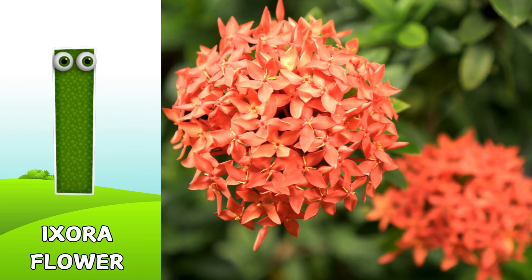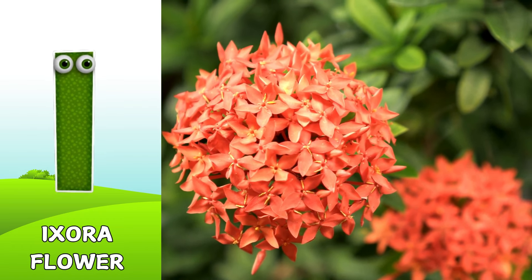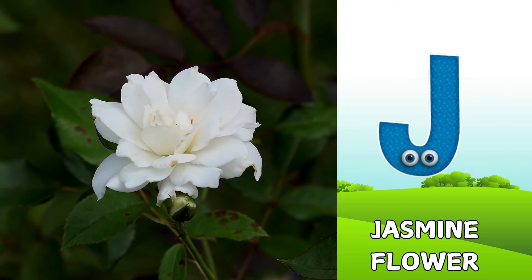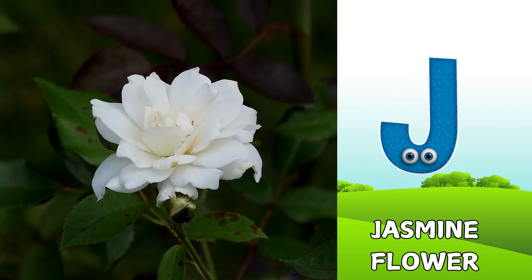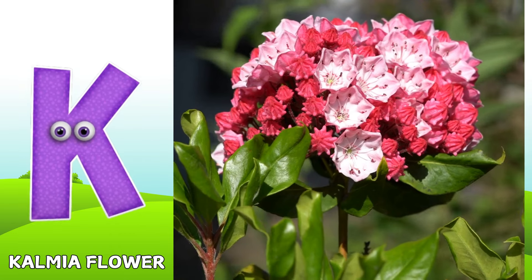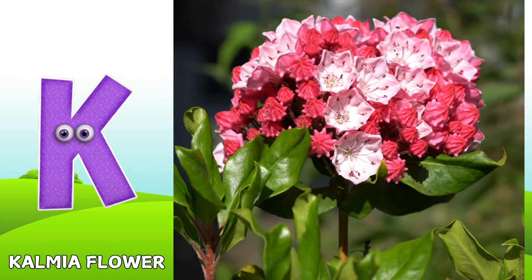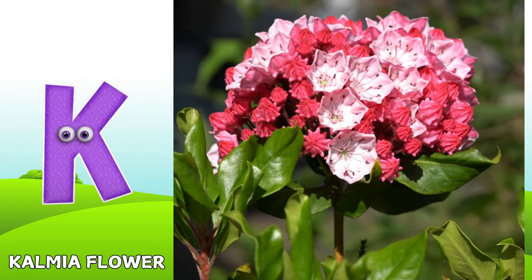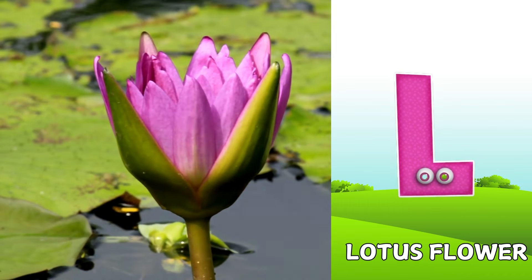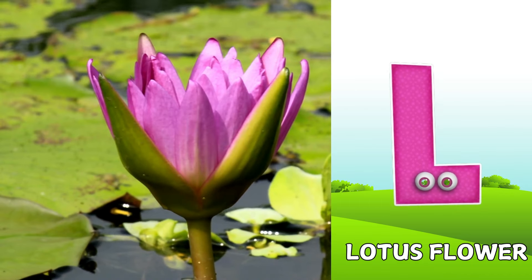I is for Ixora flower. I, I, Ixora flower. J is for Jasmine flower. J, J, Jasmine flower. K is for Kalmia flower. K, K, Kalmia flower. L is for Lotus flower. L, L, Lotus flower.